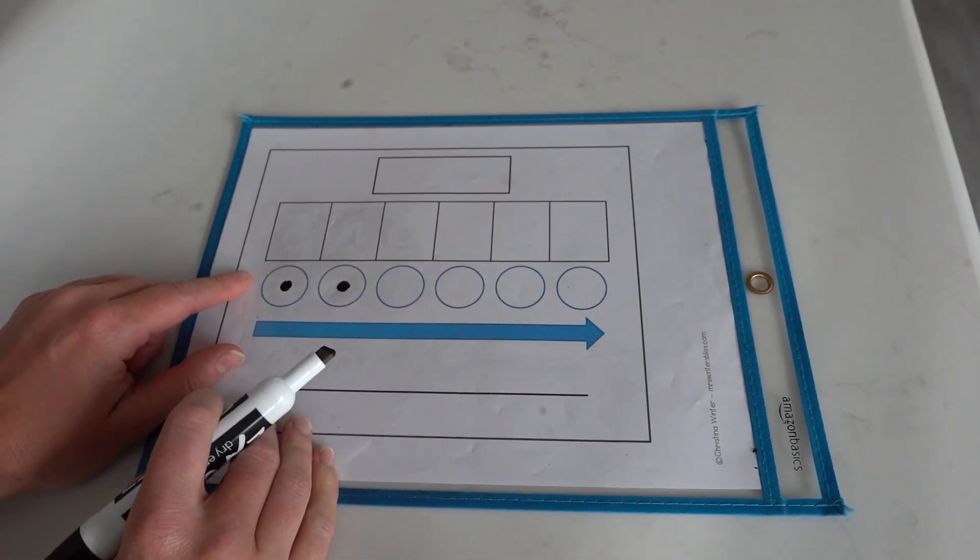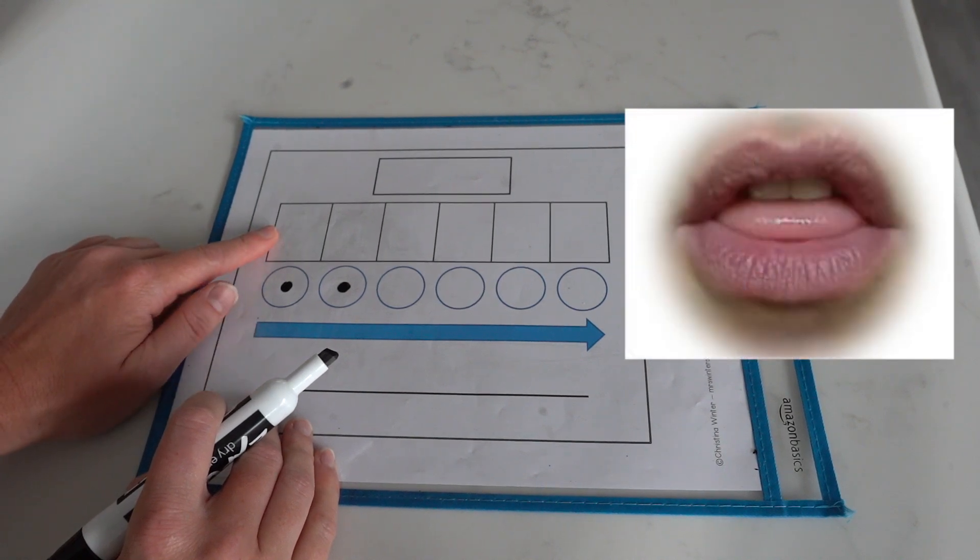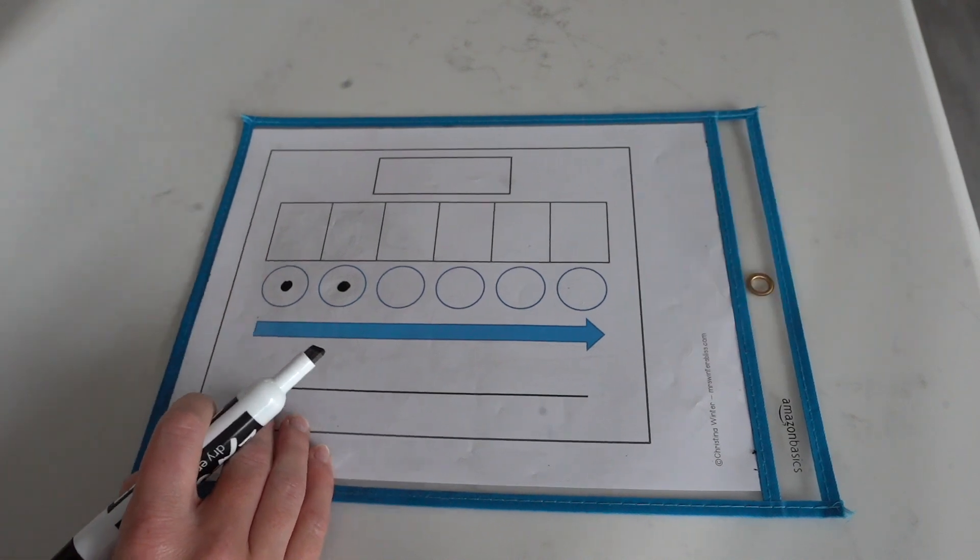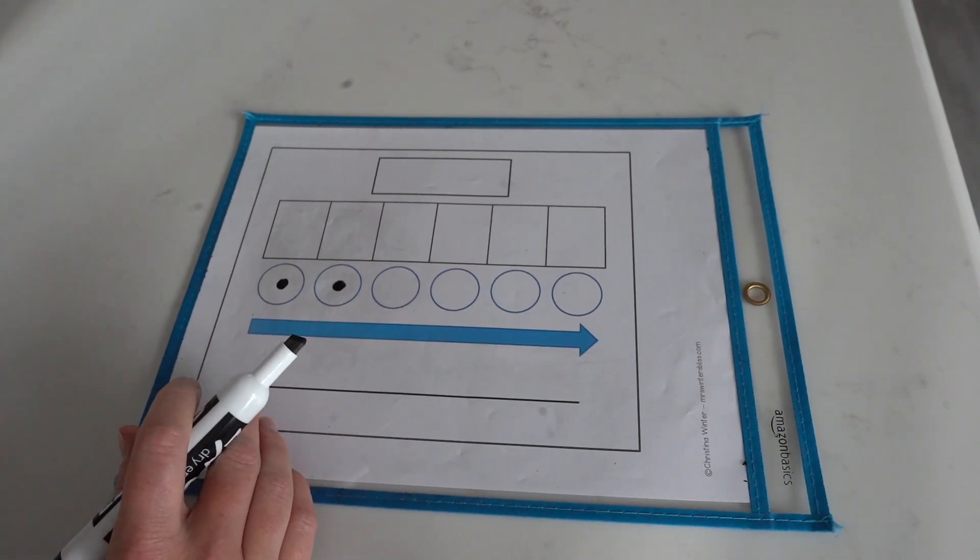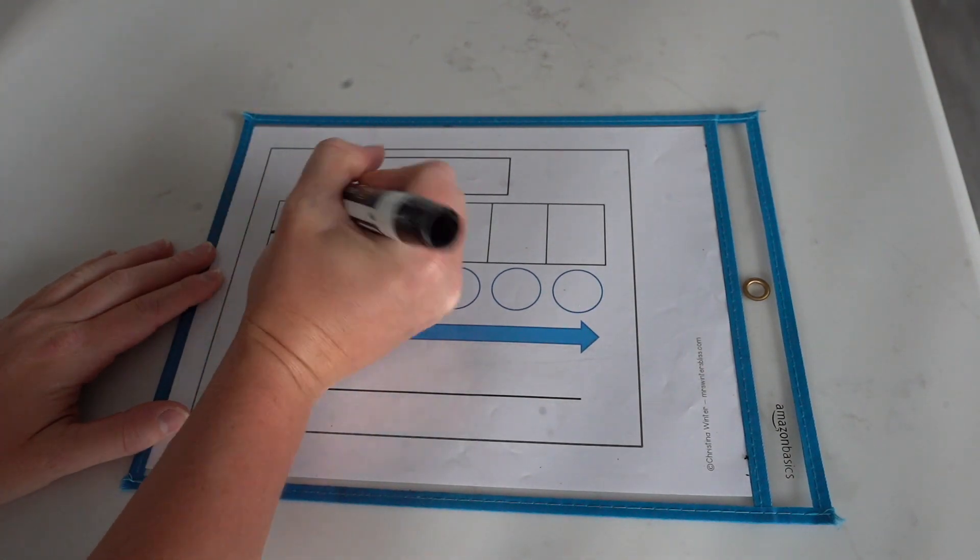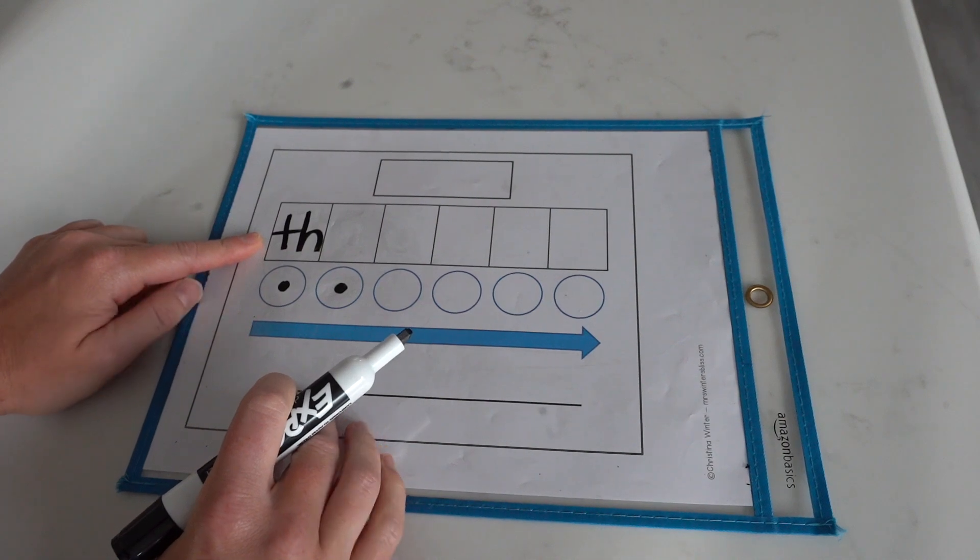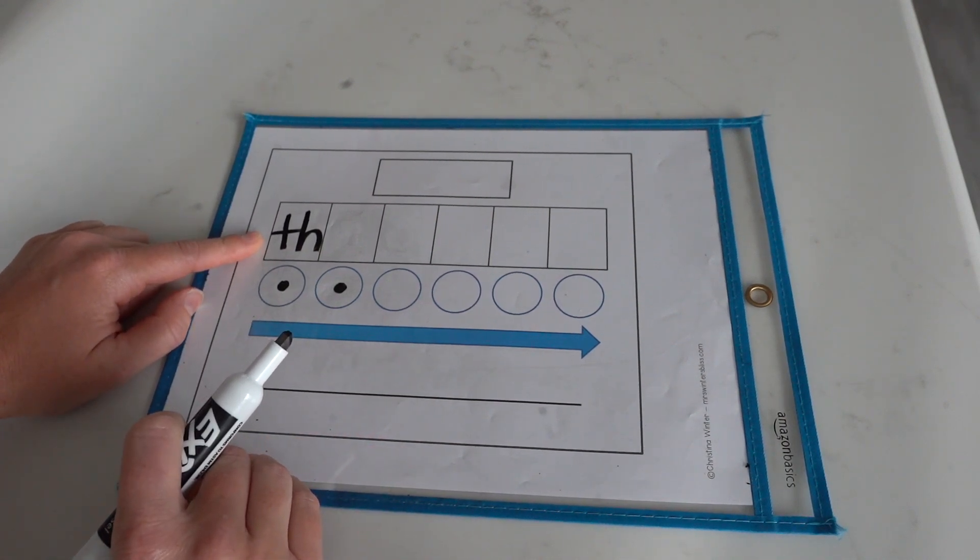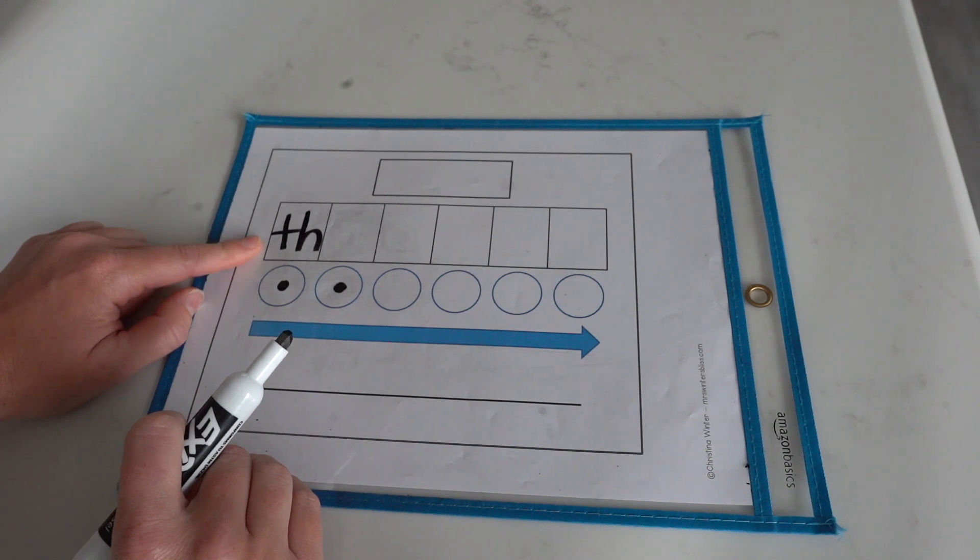The first sound I hear in 'the' is... Wow, my tongue is out, my teeth are on my tongue, and it's vibrating. That is the sound th makes. This is called a digraph. Two letters that make one sound.